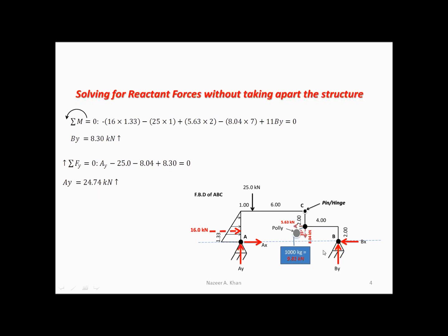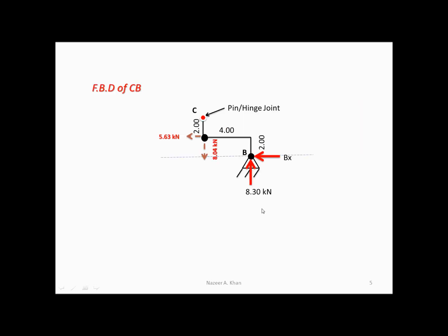If we had a negative, we would have to change the sense of that particular force. When we look at the horizontal direction, we cannot solve anything yet — if we do summation of forces in the x direction, we would have two unknowns, and that's the real difficulty about this problem. When you reach this point, you have to take apart the structure at the pin and draw the FBD of one part. I'm going to draw the FBD of the right-hand side.